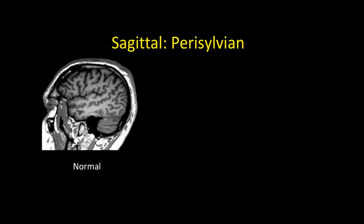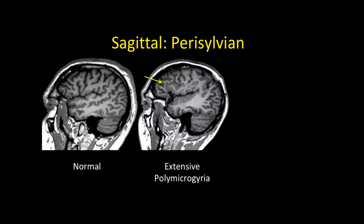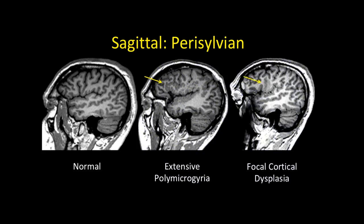After clearing the midline, we go to the perisylvian on both sides of the brain. Here's a normal image for comparison, here's a case of extensive polymicrogyria, and here's a subtle cortical dysplasia. I've found that locations where the brain folds on itself — like the interhemispheric fissure or the sylvian fissures — tend to be good areas to find seizure foci.